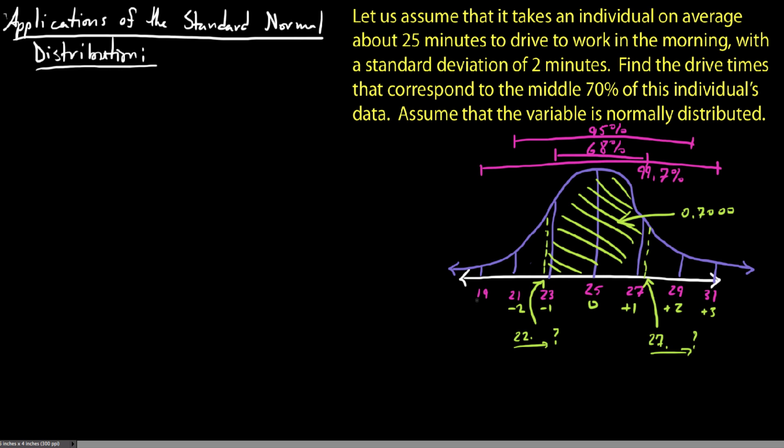The interesting thing about this problem is this table does a really good job of giving us z-scores. We have positive 1, positive 2, positive 3, the mean would be 0, we have negative 1, negative 2, and negative 3. But these numbers of standard deviations to the left or the right.